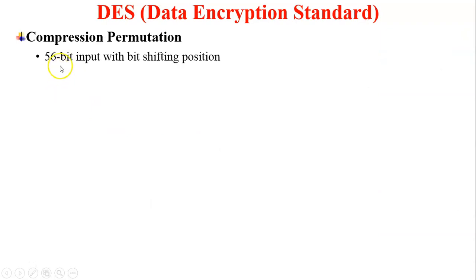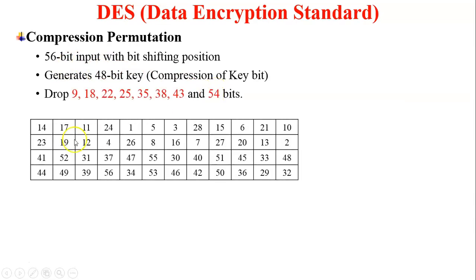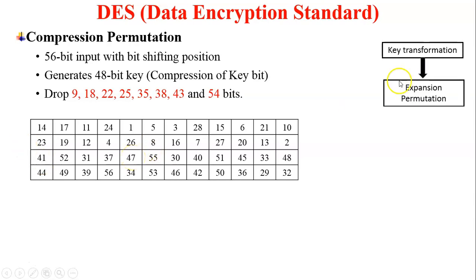Next is compression permutation. We have a 56-bit input with bit shifting applied. The key is now compressed to generate a 48-bit key. To convert the 56-bit key into a 48-bit key, bits 9, 18, 22, 25, 35, 38, 43, and 54 are dropped — a total of 8 bits removed from the 56-bit key — generating a 48-bit key. These bit positions are fixed; you cannot find positions 9, 18, 22 up to 54 in this compression table. Key transformation is now complete.